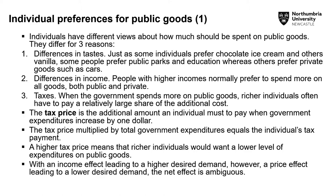As you will recall from the previous lecture, we discussed the problem of choice or preferences for public goods — in other words, what is it that government should be providing, what public goods should it be spending money on. Why is it that views differ on what money should be spent on? Well, there are three reasons.